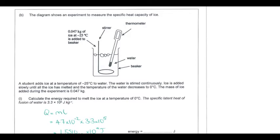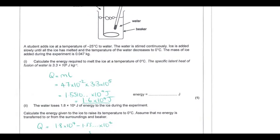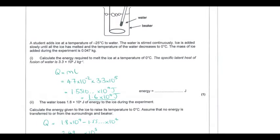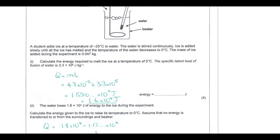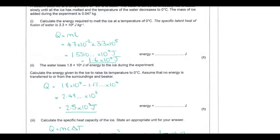Now looking at a practical experiment to measure the specific heat capacity of ice. Ice at minus 25 degrees is placed in water and stirred to ensure even heat distribution throughout the system. Ice is added and stirred until all the ice is melted and the water temperature reaches zero degrees — at thermal equilibrium, the ice is also at zero. We calculate the energy required to melt the ice using Q = mL, giving an answer expressed to two significant figures in standard form.